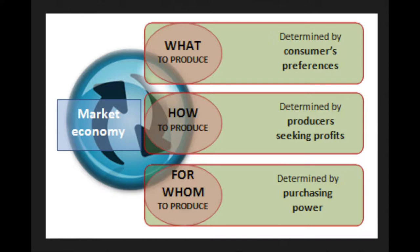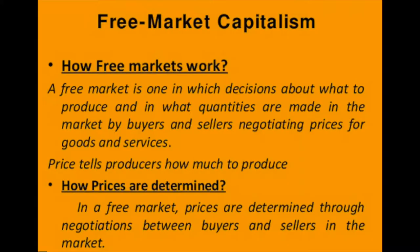This is how we describe a market economy. A free market is one in which decisions about what to produce and in what quantities are made in the market by buyers and sellers negotiating prices for goods and services. The price tells producers how much to produce. In a free market, prices are determined through negotiations between many individual buyers and many individual sellers in the market.